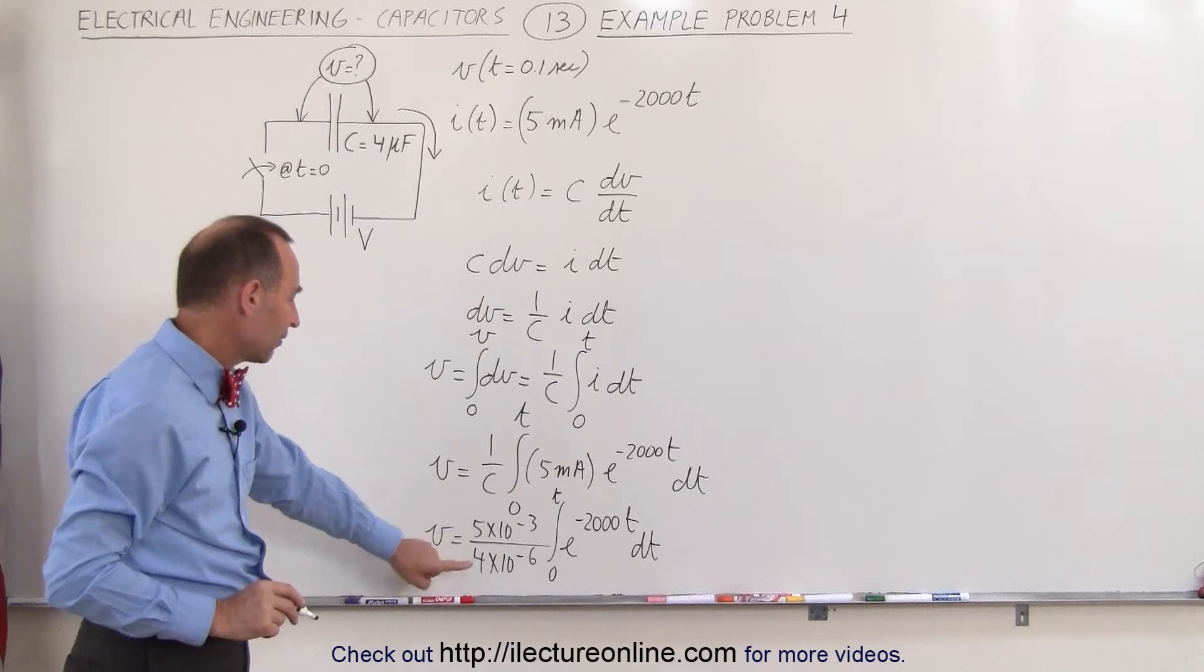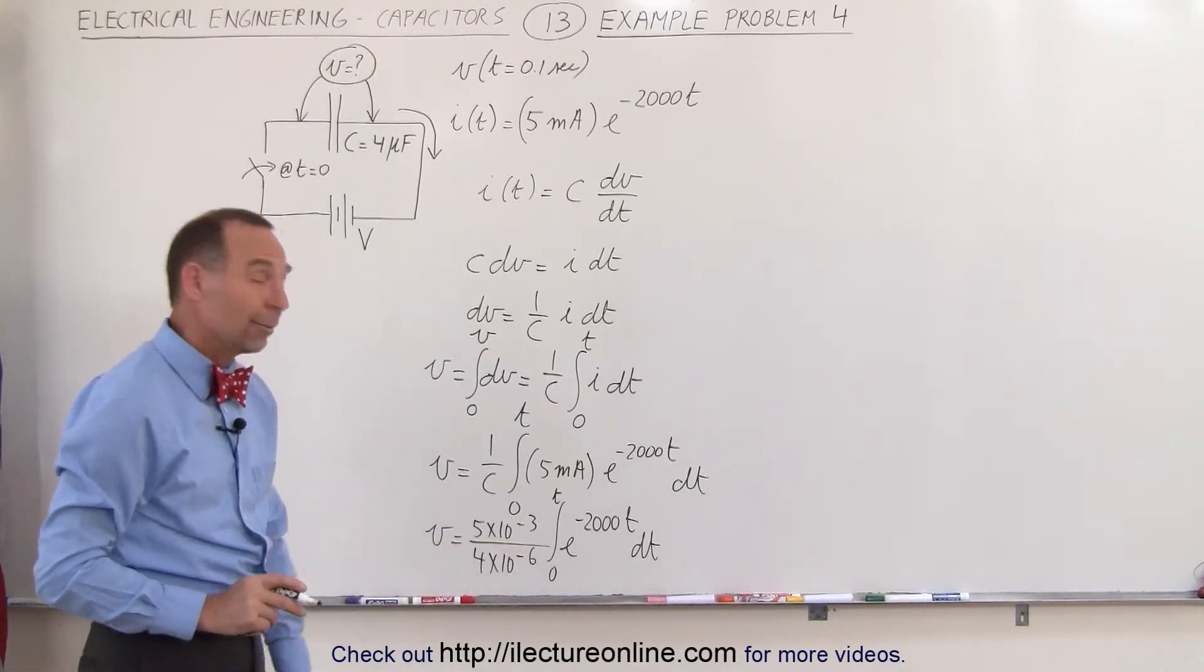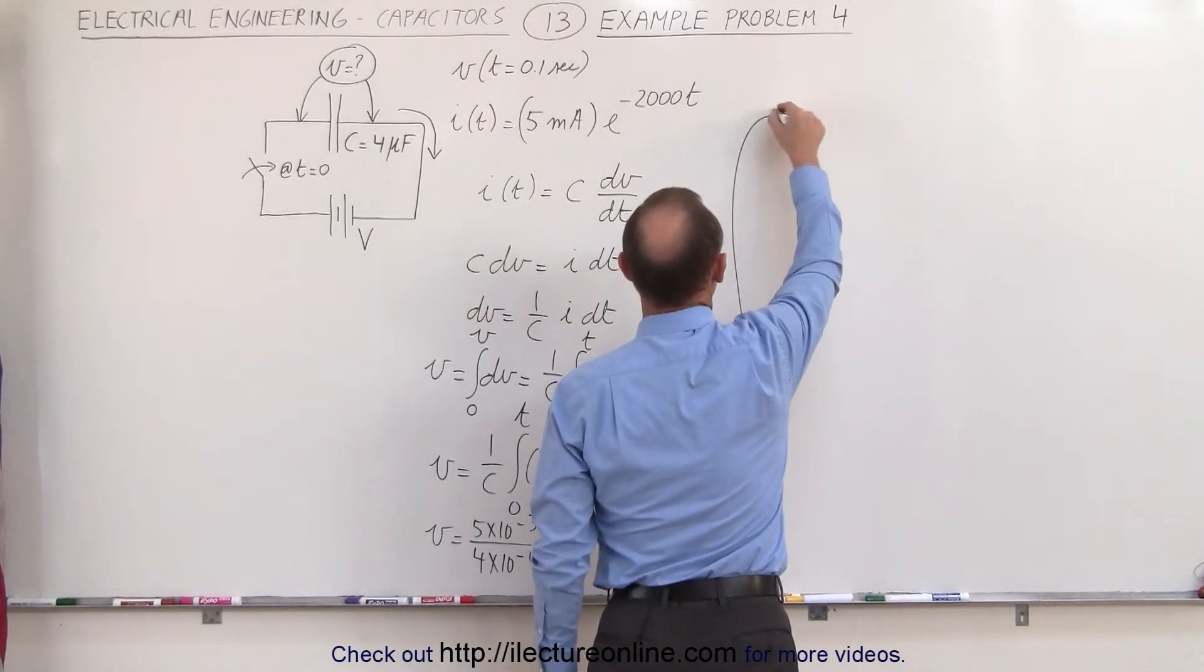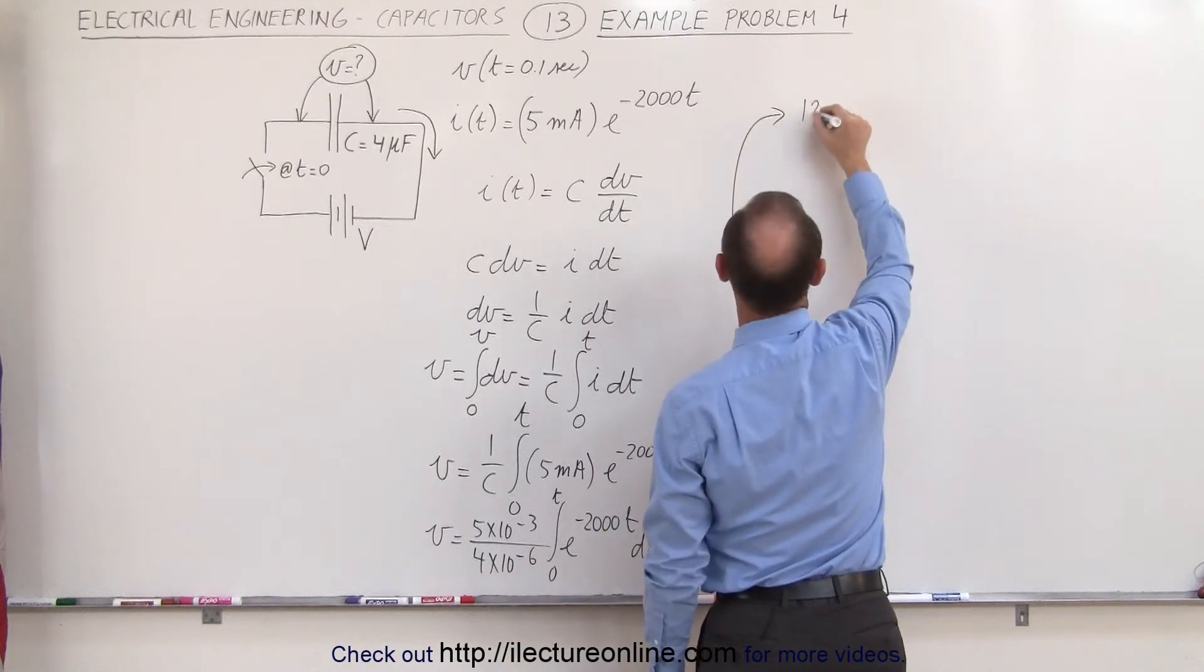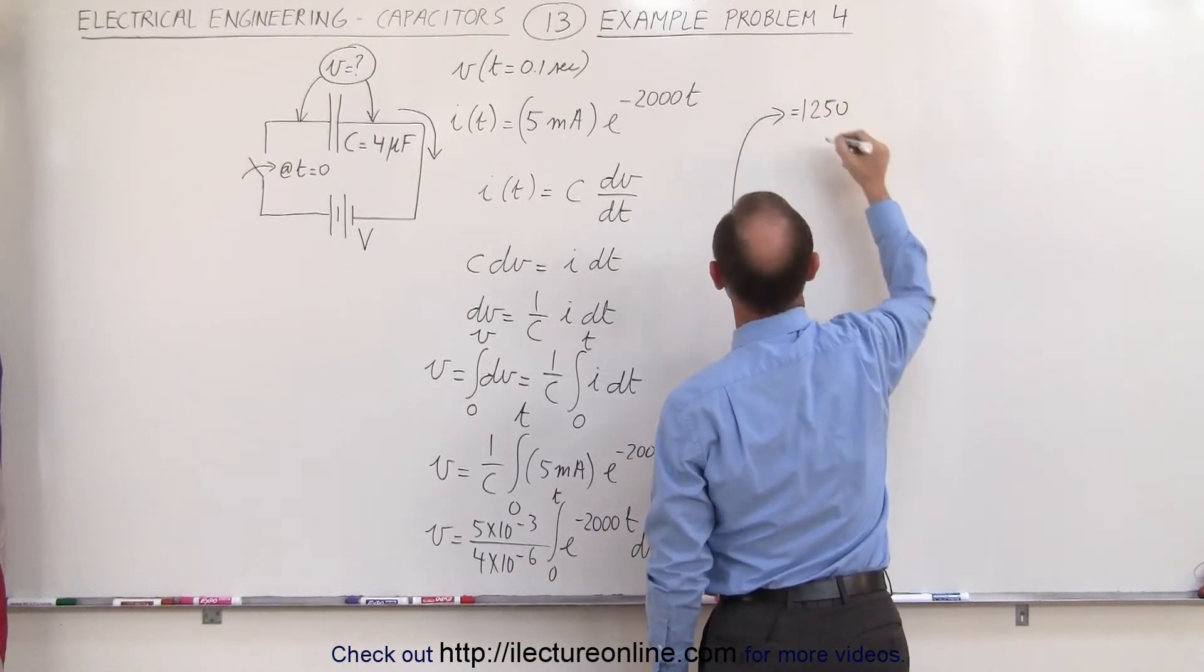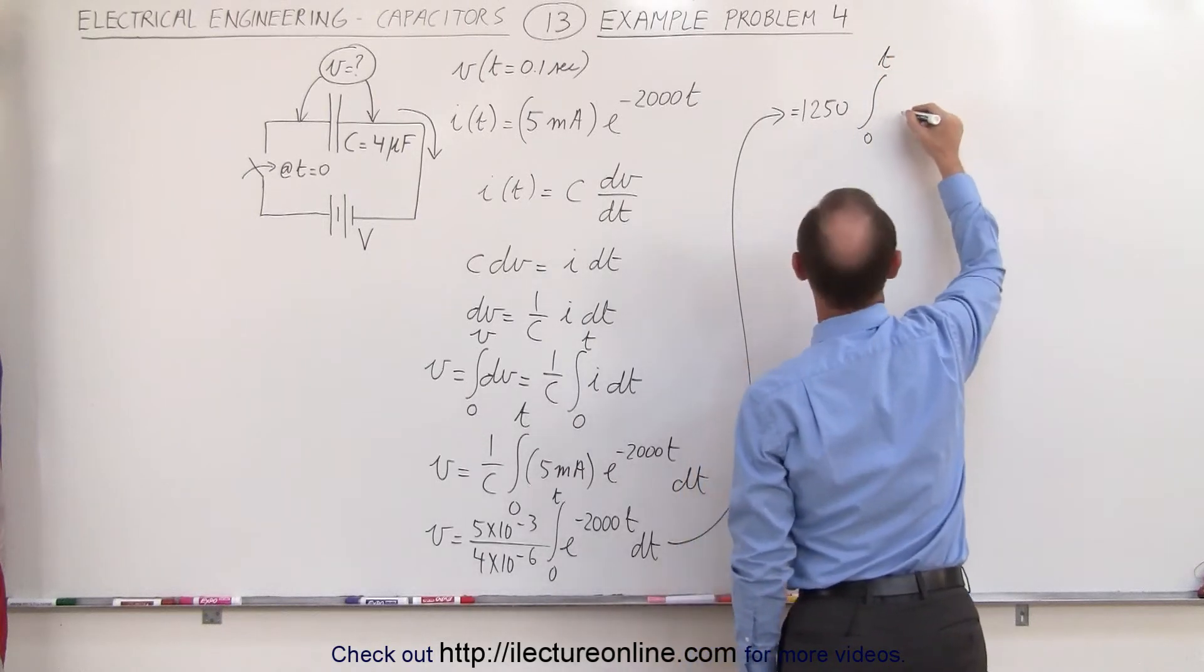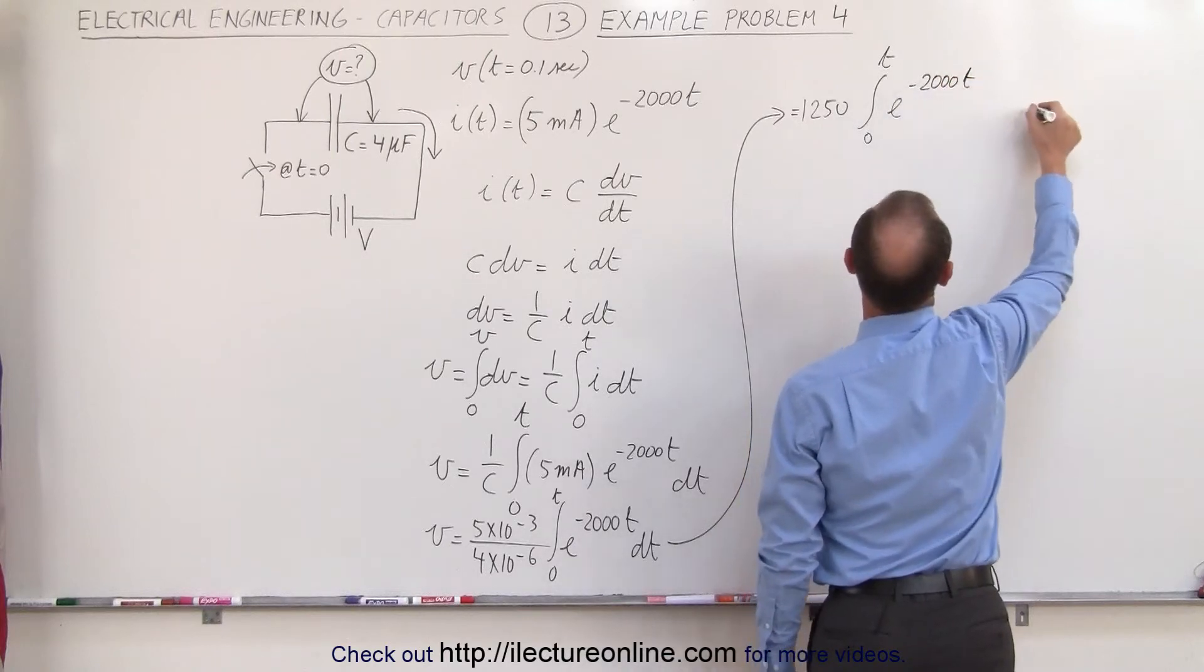All right, simplifying this a little bit. 5 divided by 4 is 1.25 and 10 to the minus 3 divided by 10 to the minus 6 is 1000. So this can now be 1.25 times 1000 is 1250. So that's equal to 1250 times the integral from 0 to t of e to the minus 2000 t dt.